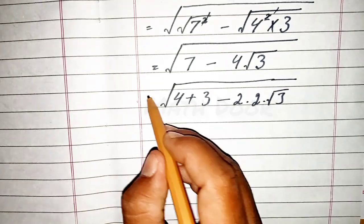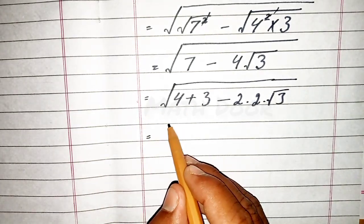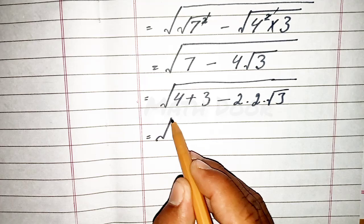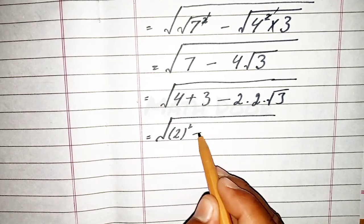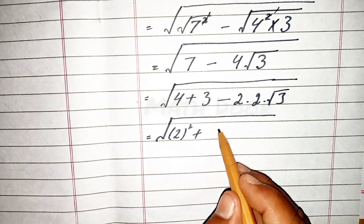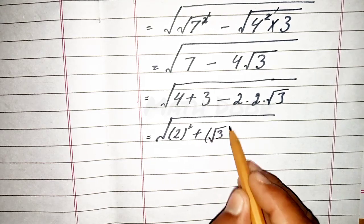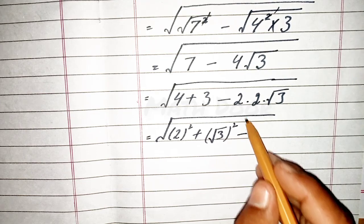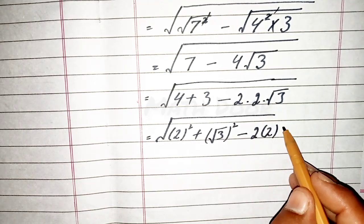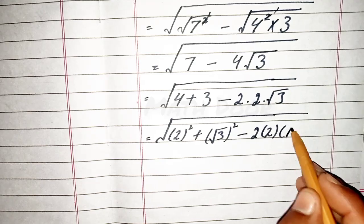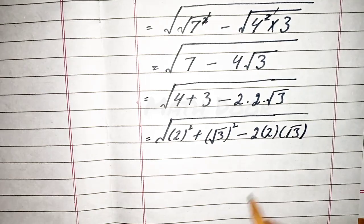Now we write 4 as 2 square, and 3 as under root 3 square, minus 2 into 2 and square root of 3.